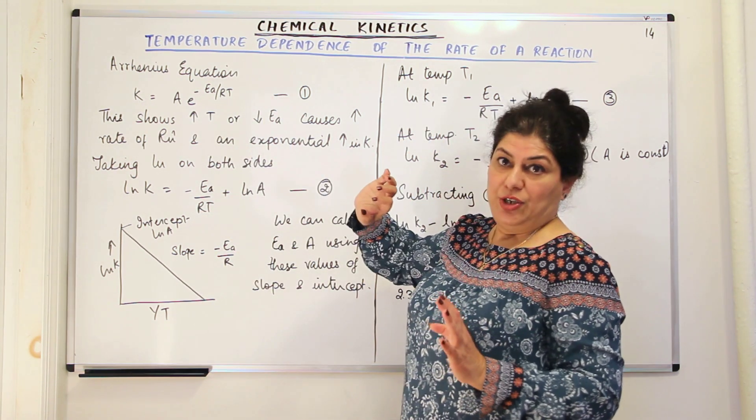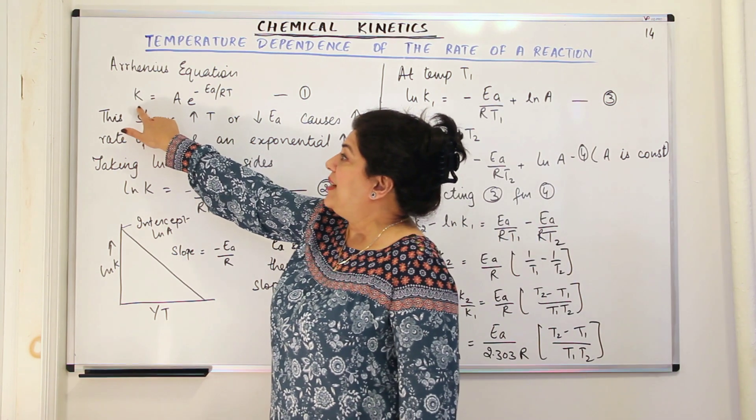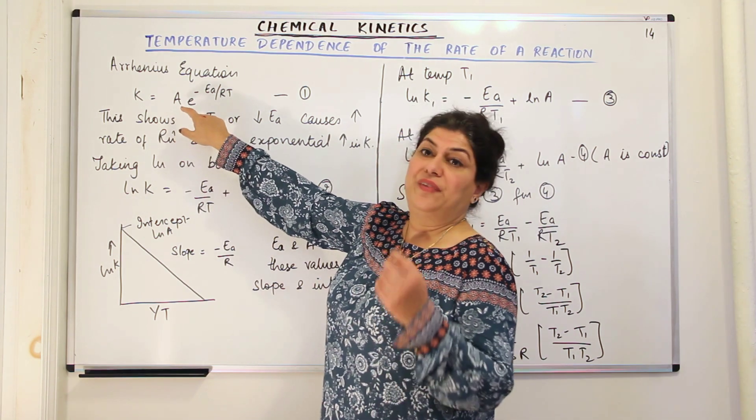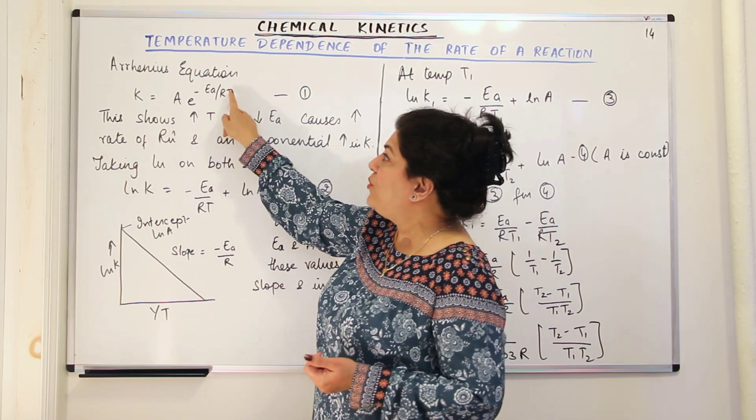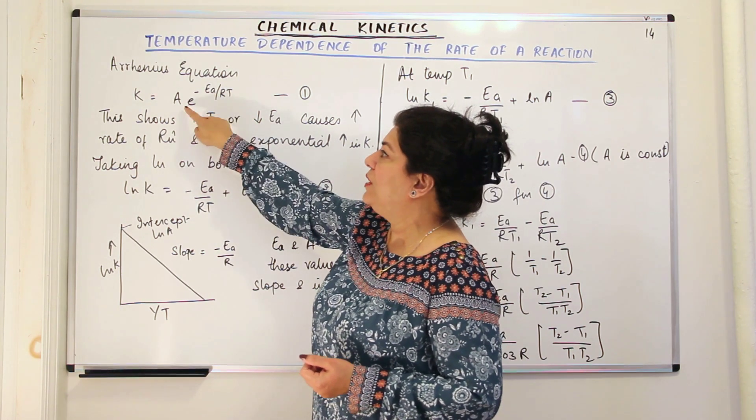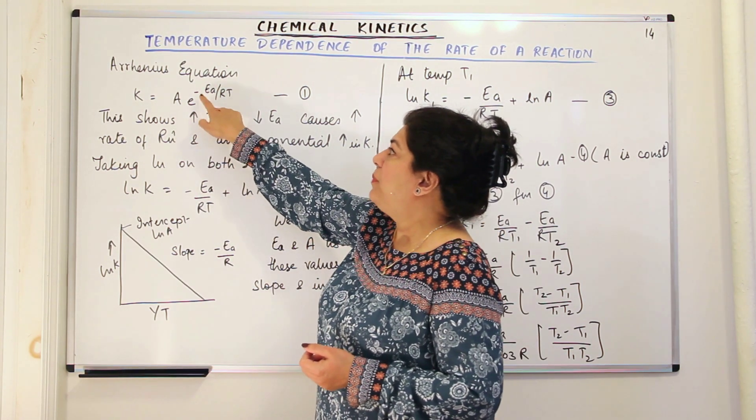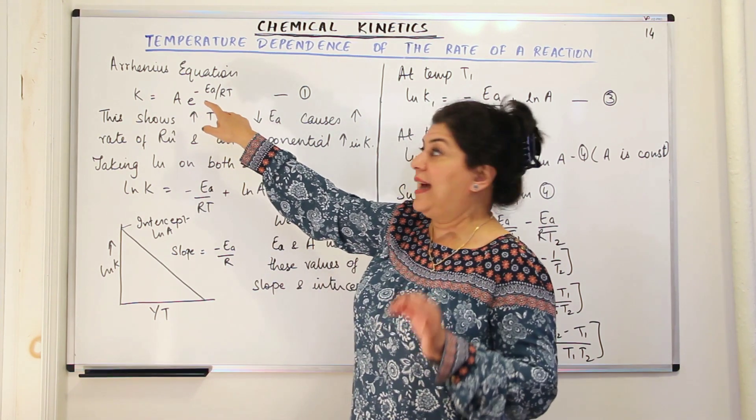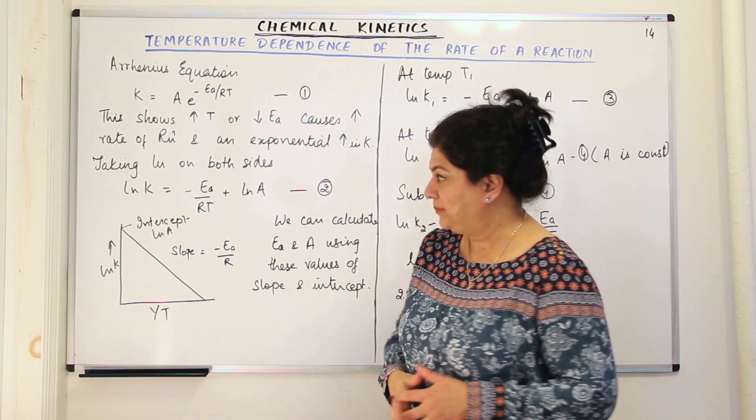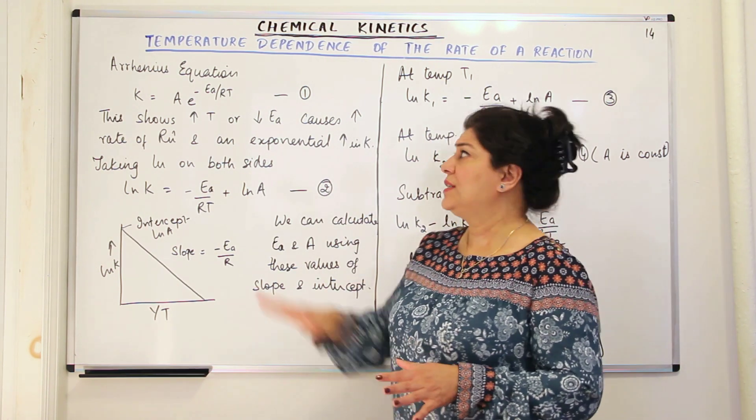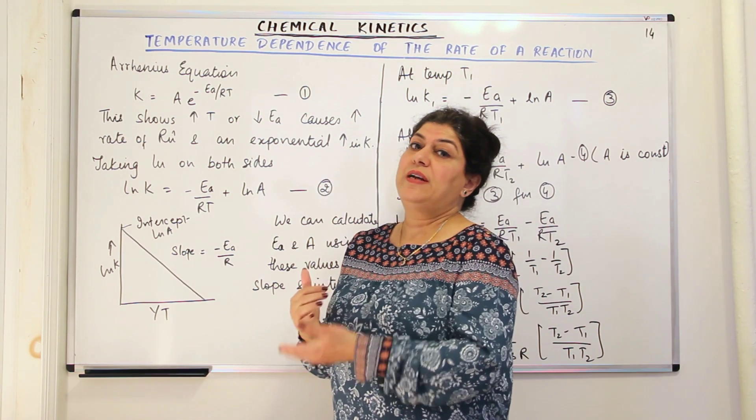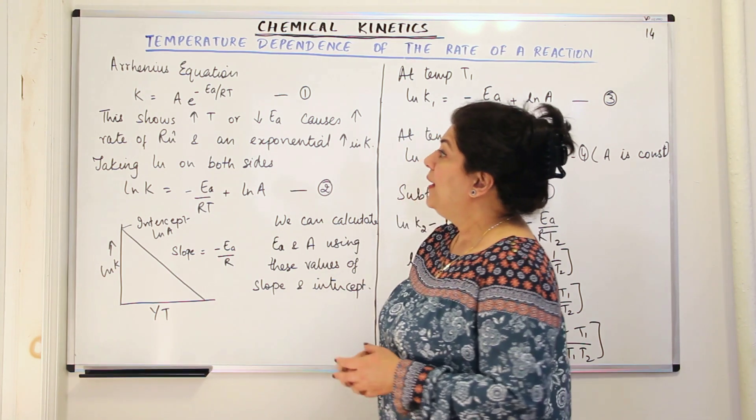Now, according to the Arrhenius equation, the equation is k, that is rate constant, is equal to A, where A is the Arrhenius factor or the frequency factor and it is also known as a pre-exponential factor because it is before the exponential form here. So e to the power of -Ea/RT, where Ea is the activation energy, R is gas constant and T is the absolute temperature. You have already understood this. And in case you do not get what I am telling you till now, I would encourage you to watch the previous video.